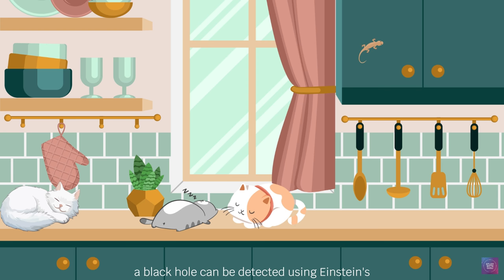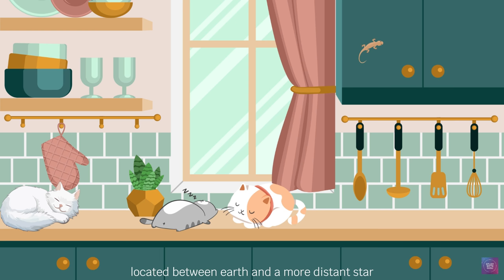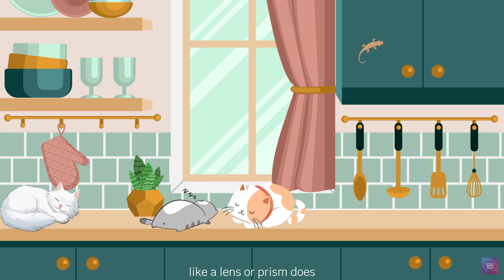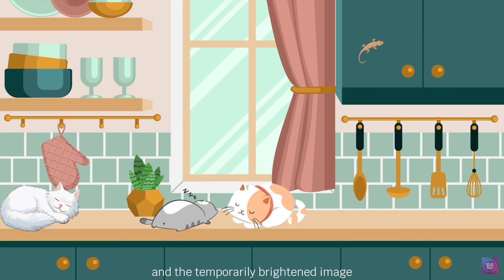And finally, a black hole can be detected using Einstein's theory of relativity, which tells us that gravity can actually bend and warp space. An object with a lot of gravity located between Earth and a more distant star can bend that star's light like a lens or a prism does. This is called the gravitational lens effect. In 1996, a gravitational lens passed between Earth and Macho 96 BL5, and the temporarily brightened image was photographed by both the Hubble Space Telescope and ground observers.